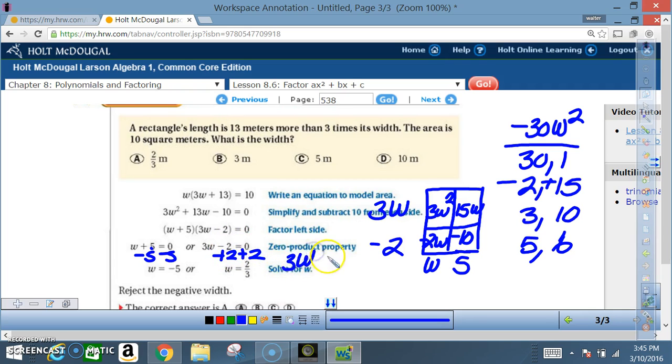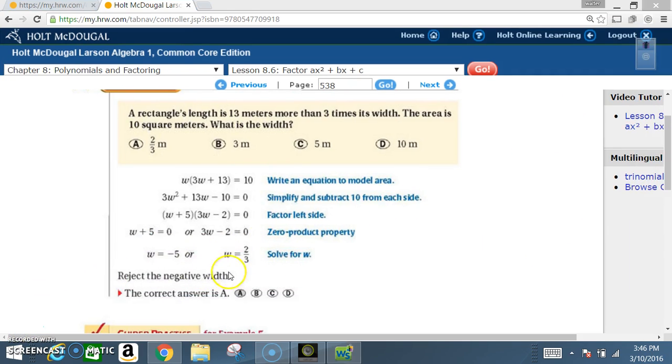3w equals 2. We divide both sides by 3 and we end up with w equaling 2/3. That's 2/3. And we already know from previous lessons to reject the negative width because width cannot be negative. So our answer has to be w equals 2 over 3, which would be choice A.